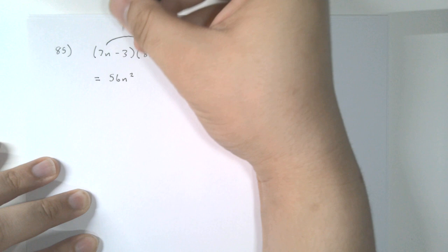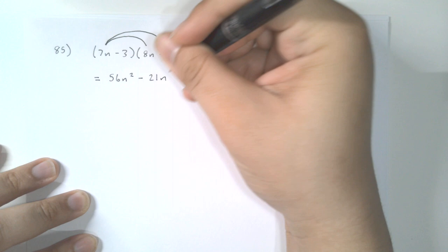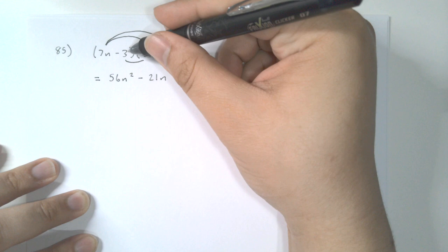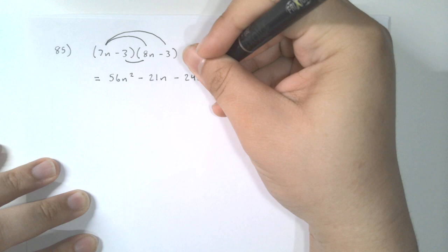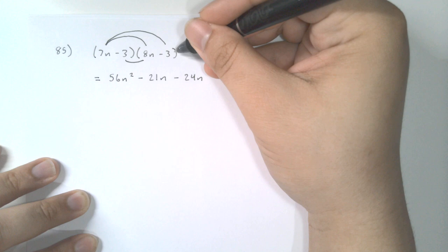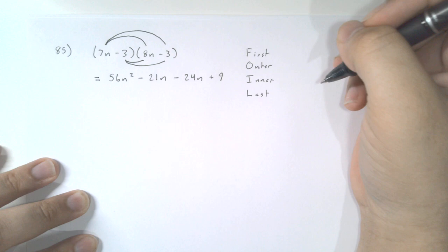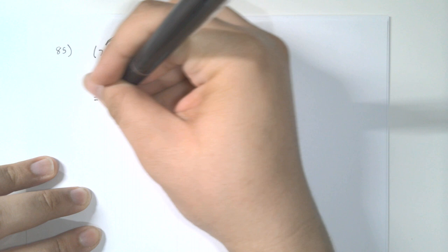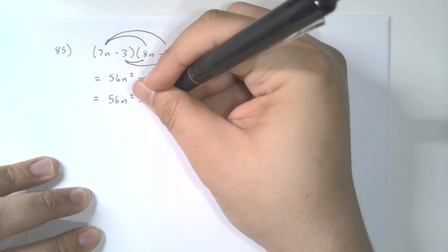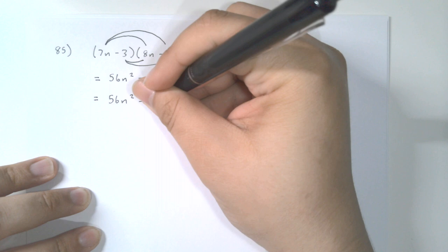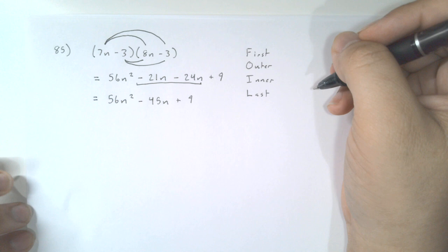Then we do the outer terms — the first term and the last term — giving us minus 21n. We do the inner terms, getting minus 24n. And then we do the last terms. When we combine like terms we have 56n squared minus 45n — because those two middle terms combine — and then plus 9. And we're done.